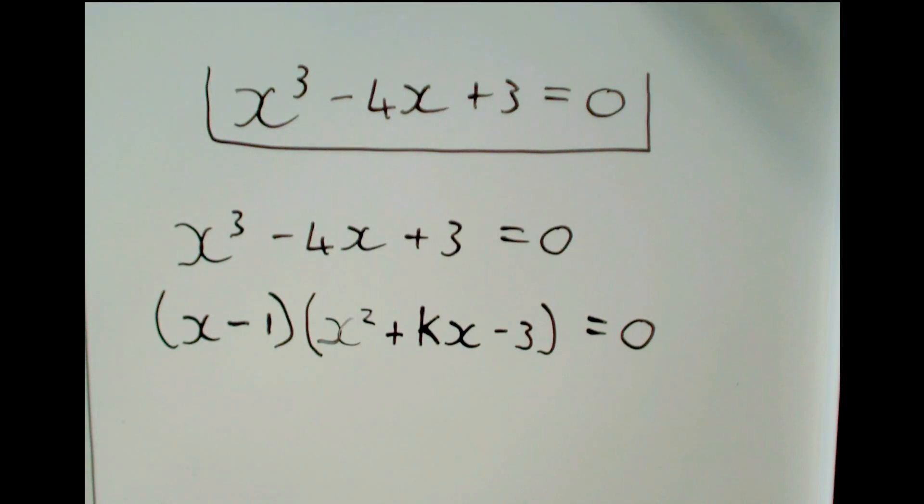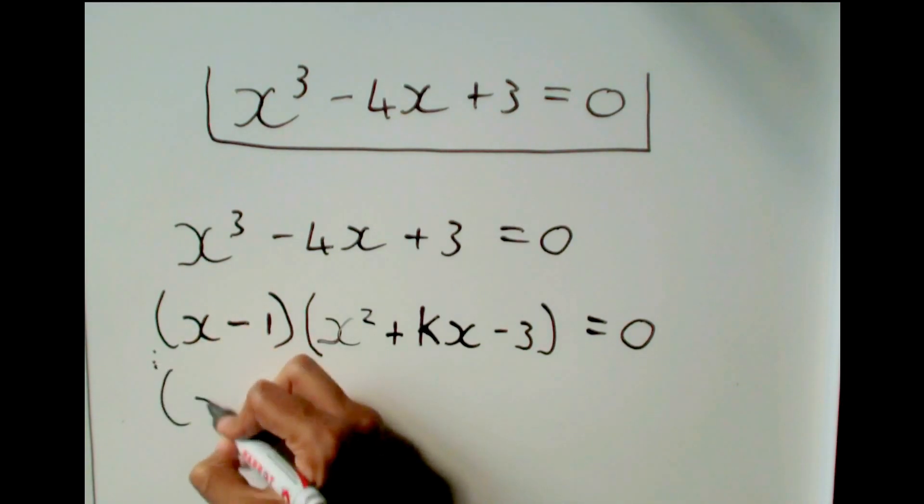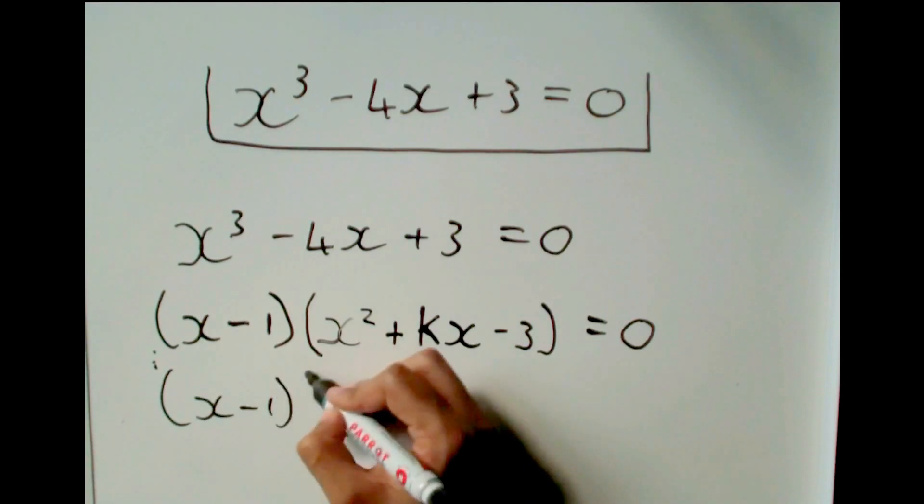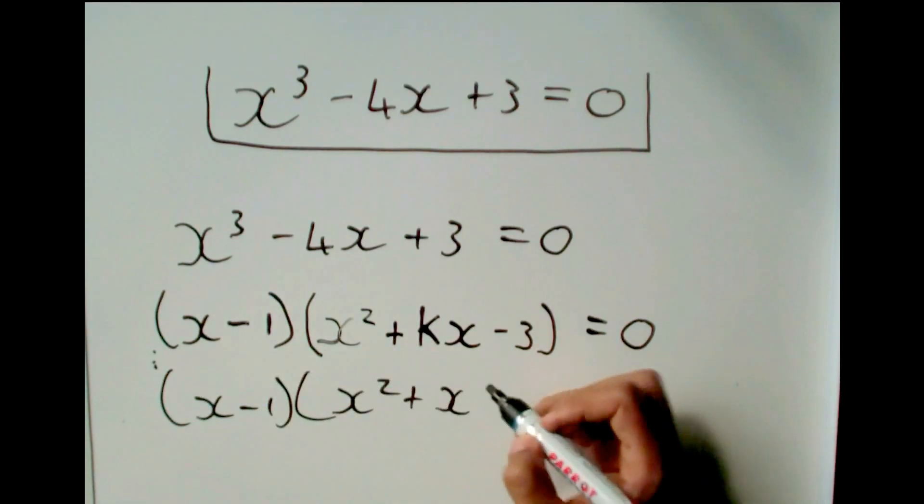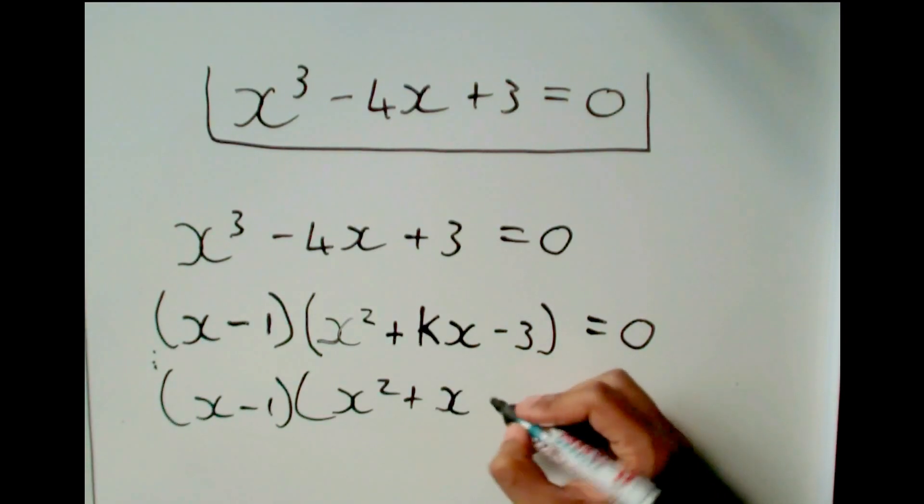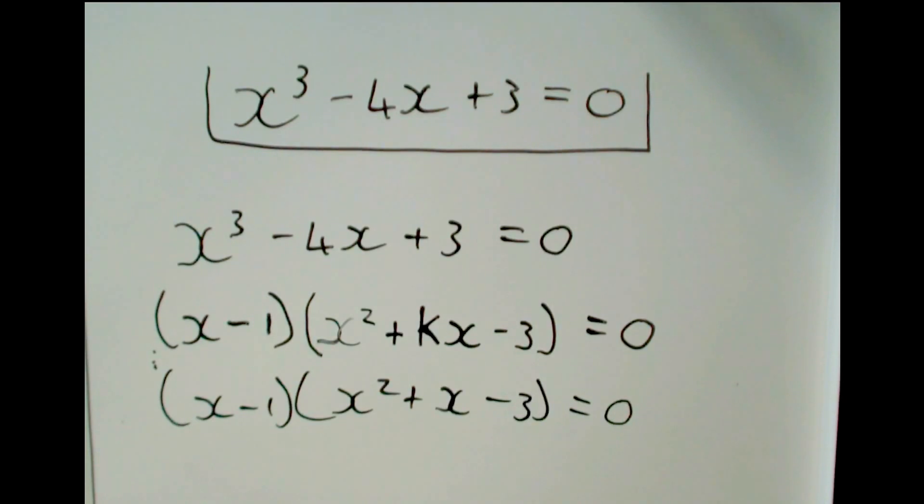So now that we know what k is, we can go here and say this is x minus 1, x squared plus x, because I'm putting k as 1 in there, minus 3 is equal to 0. So here we have the fully factorized version. I say fully factorized because in this case this term does not factorize.